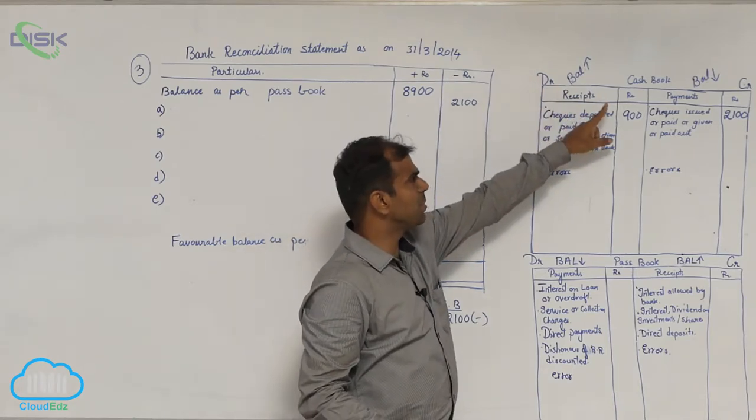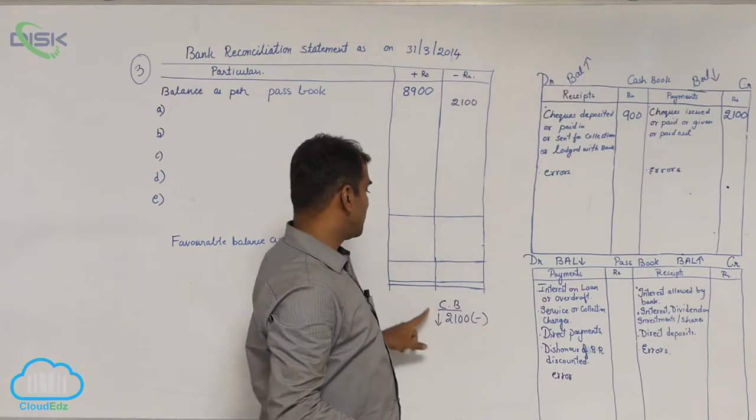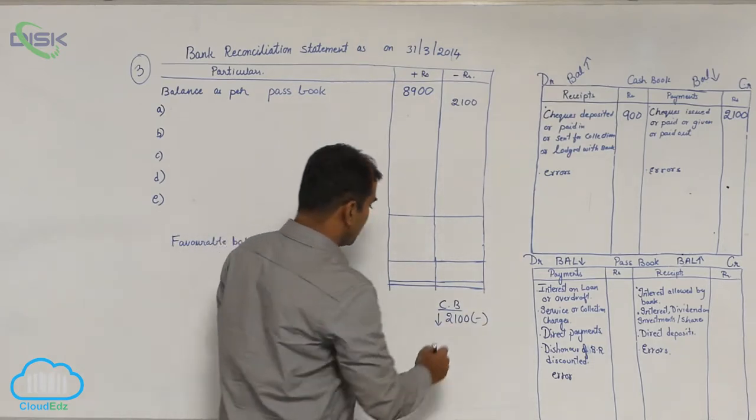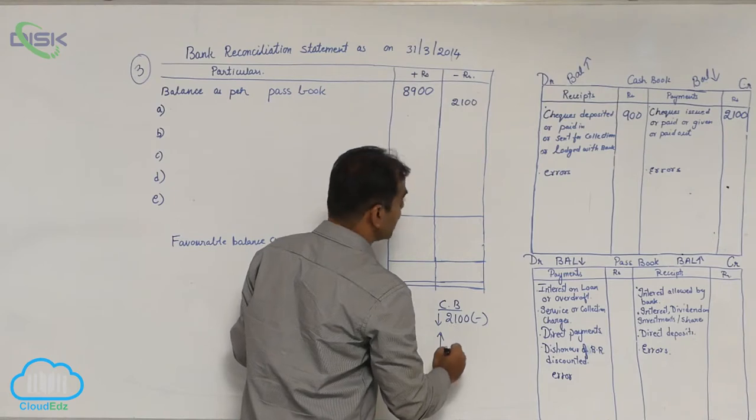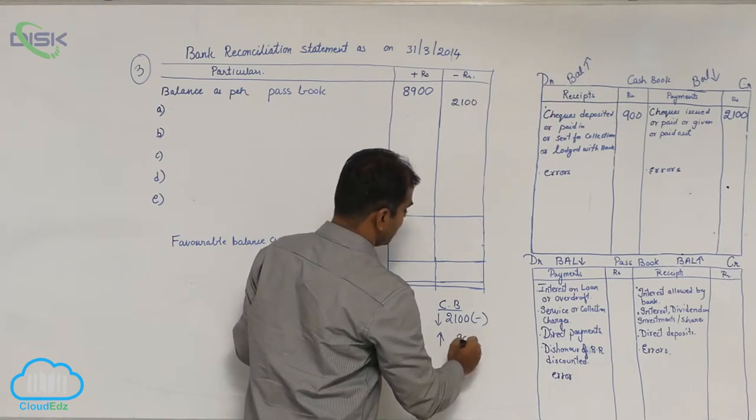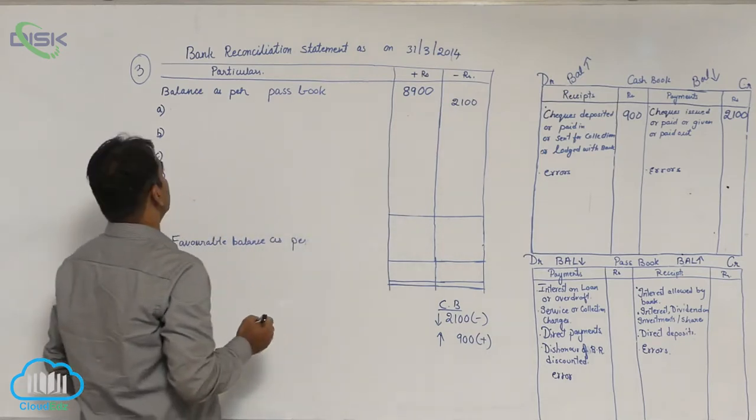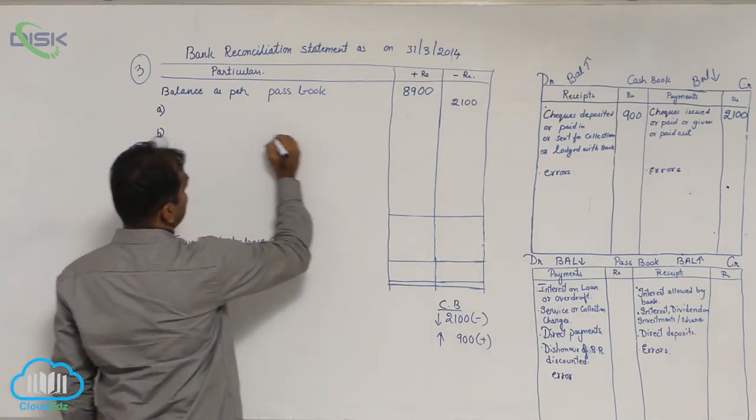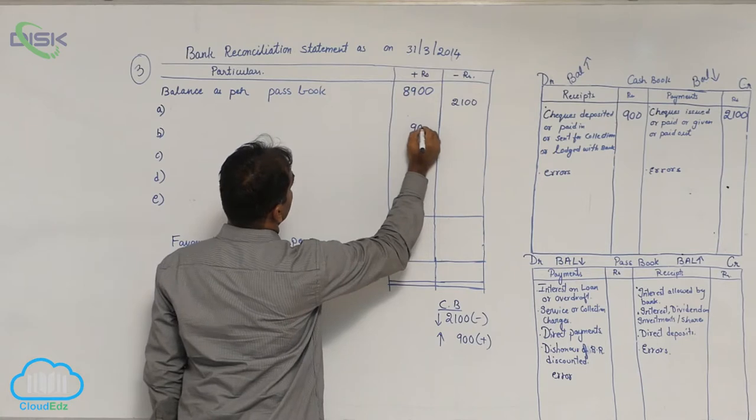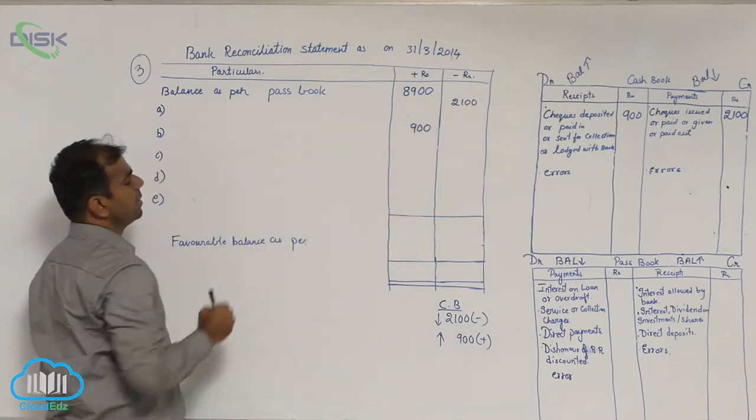So entry in the cashbook on debit side, cashbook balance will increase. Which is the balance we are finding out cashbook. So cashbook balance is increasing by 900. So add 900. Now, so you will write the same statement and enter 900 in plus column.